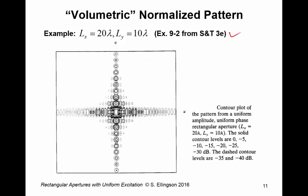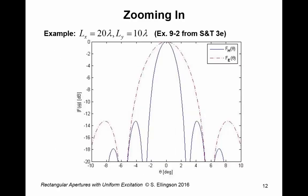Another way to look at these patterns is not in terms of E-plane or H-plane, but rather as volumetric normalized patterns. When we say volumetric, that's just a way of saying we're talking about the entire 2D over-sphere behavior of the pattern. For the same example in your textbook, there is a nice drawing of this. In this case the authors use contour lines to indicate the beams and side lobes — contour levels at 0, −5, −10 dB and so on. This shows the E-plane and H-plane behavior in a 2D projection.